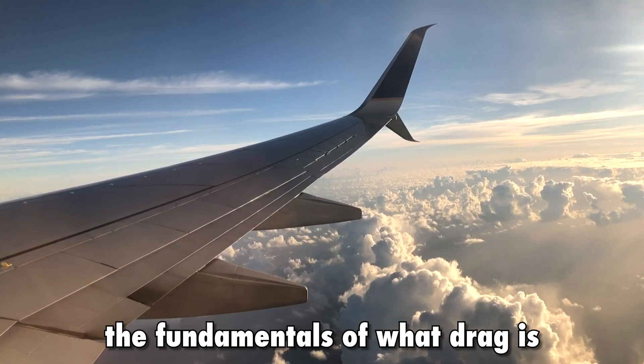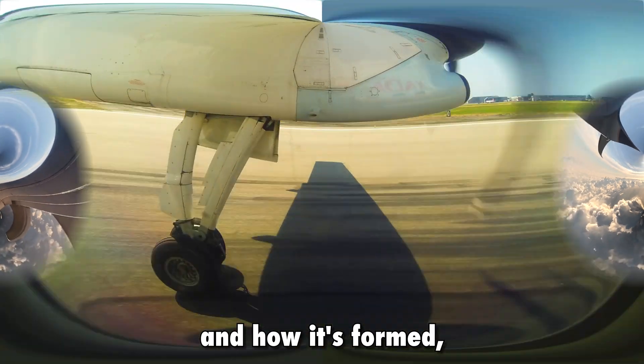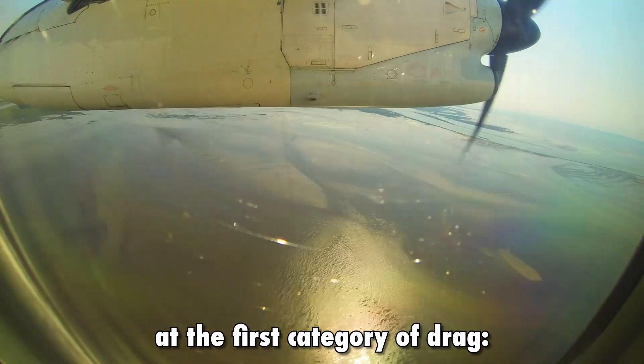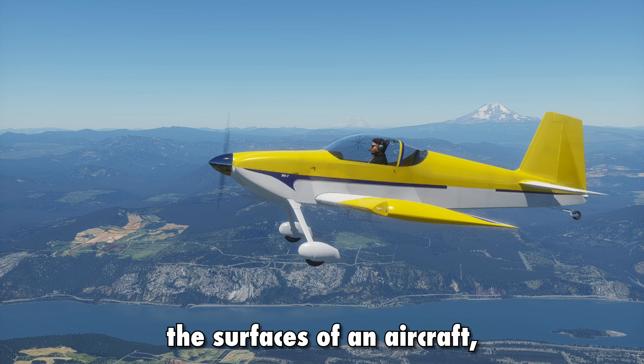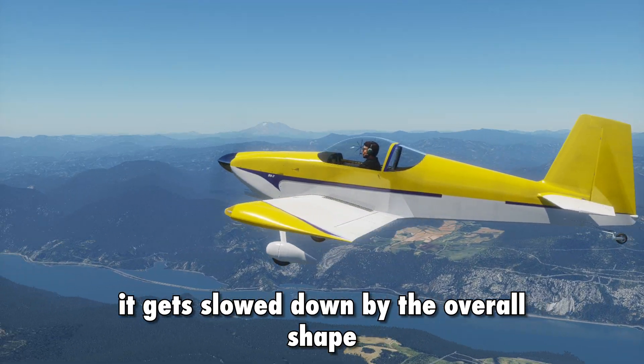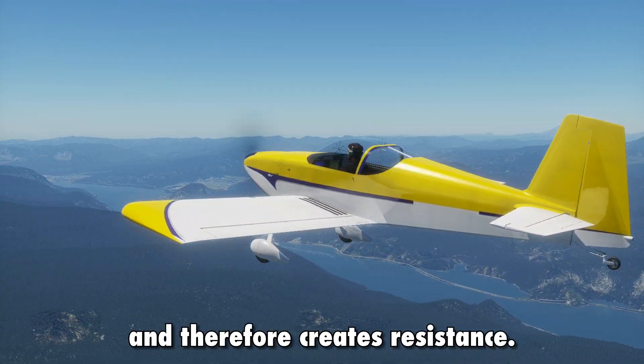Now that you understand the fundamentals of what drag is and how it's formed, let's take a look at the first category of drag, parasitic drag, and its different types. First of all, when air hits the surfaces of an aircraft, it gets slowed down by the overall shape and therefore creates resistance. This is called form drag.